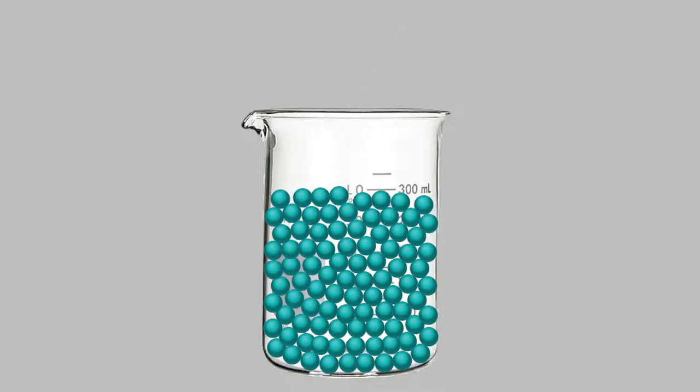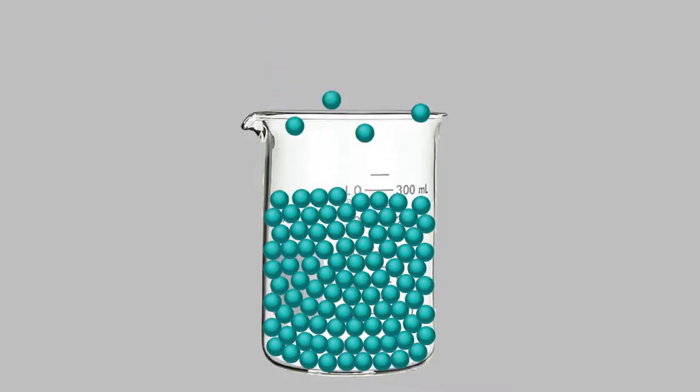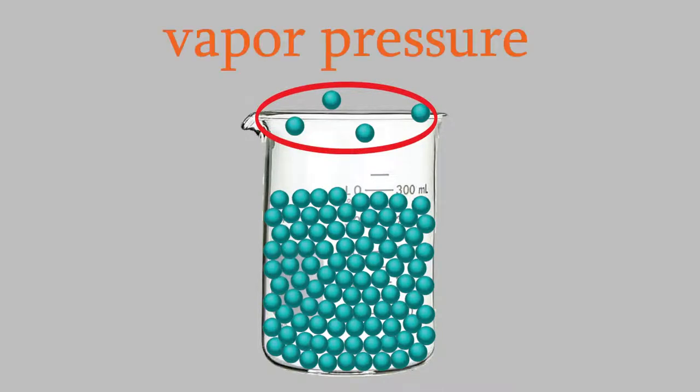But think about what that means for a second. Because molecules are constantly escaping from the surface of the liquid, that means there's always a small amount of gas above the liquid's surface. This is called the vapor pressure, and every liquid always has a vapor pressure above it. For example, at 25 degrees Celsius, water has a vapor pressure of 23.76 millimeters of mercury. So that means that if we have a beaker of water in a room where the pressure is one atmosphere, or 760 millimeters of mercury, 23.76 millimeters of that is due to water above the beaker, and the other 736.24 millimeters is because of the other gases in the air.